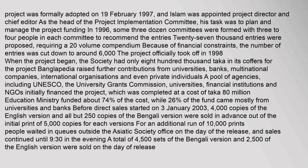Before direct sales started on 3 January 2003, 4,000 copies of the English version and all but 250 copies of the Bengali version were sold in advance out of an initial print of 5,000 copies for each version. For an additional run of 10,000 prints, people waited in queues outside the Asiatic Society office on the day of release, and sales continued until 9:30 in the evening. A total of 4,500 sets of the Bengali version and 2,500 of the English version were sold on the day of release.